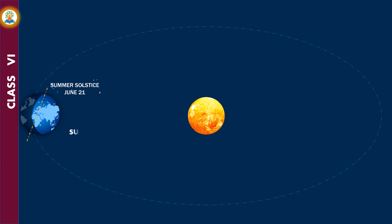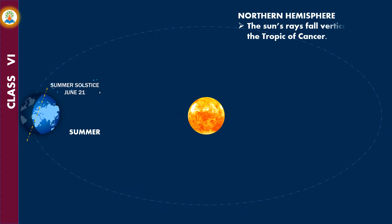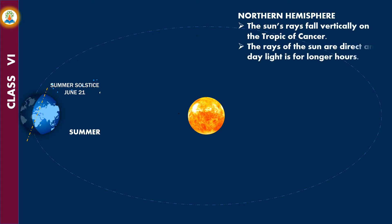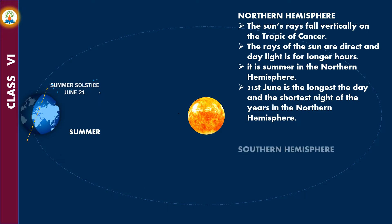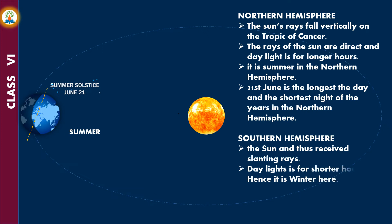On 21st June, the Northern Hemisphere is inclined towards the Sun. The Sun's rays fall vertically on the Tropic of Cancer. Since the rays of the Sun are direct and daylight is for longer hours, it is summer in the Northern Hemisphere. 21st June is the longest day and the shortest night of the year in the Northern Hemisphere. In the Southern Hemisphere the conditions are just the opposite — the region is turned away from the Sun, receives slanting rays, daylight is for shorter hours, hence it is winter.